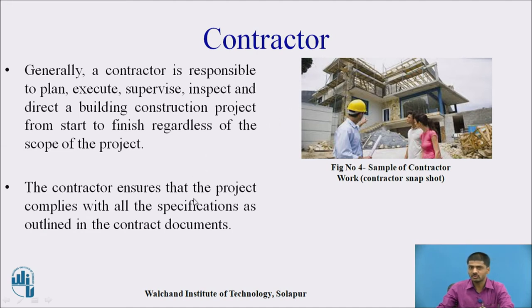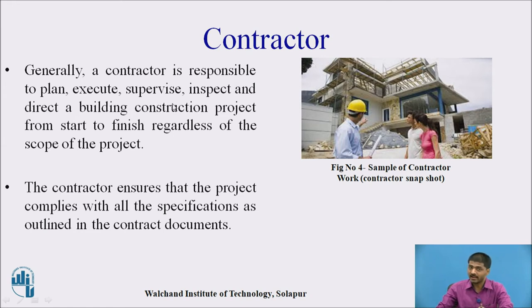The contractor ensures that the project complies with all the specifications as outlined in the contract documents. In contract documents, it is mentioned — for a specific column, the number of steels required, their weight, and bar diameter are all specified. According to those specifications, the contractor prepares and supervises each and all things. So planner, designer, and consultant together equal the contractor. The role of this particular contractor is a tremendous one in civil engineering.